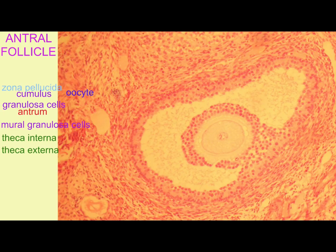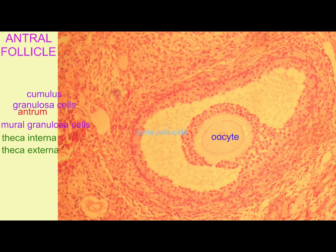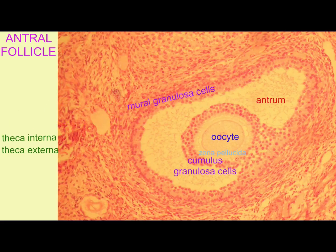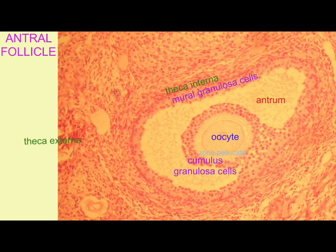The theca interna and the granulosa cells are responding to the presence of FSH and LH from the pituitary, and so the antral follicle is a complex structure made of many interdependent cell types.